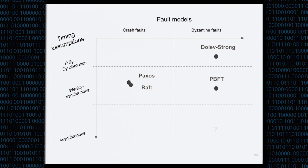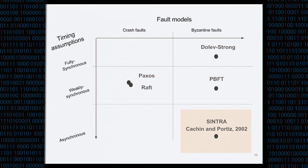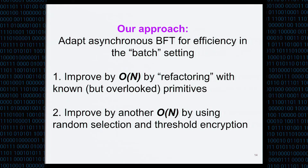Although we know of randomized agreement protocols, these are thought to be impractical. Our protocol directly refutes this claim by presenting a randomized agreement protocol that is practical. We only know of one prior full system implementing randomized agreement protocols — Cintra from 2002 by Cachin and Poritz. This is our starting point. Our approach is to use Cintra as a starting point but improve it. Cintra essentially commits transactions one at a time; we adapt it to efficiently commit a large batch of transactions at a time, using a mix of existing primitives assembled to improve performance.